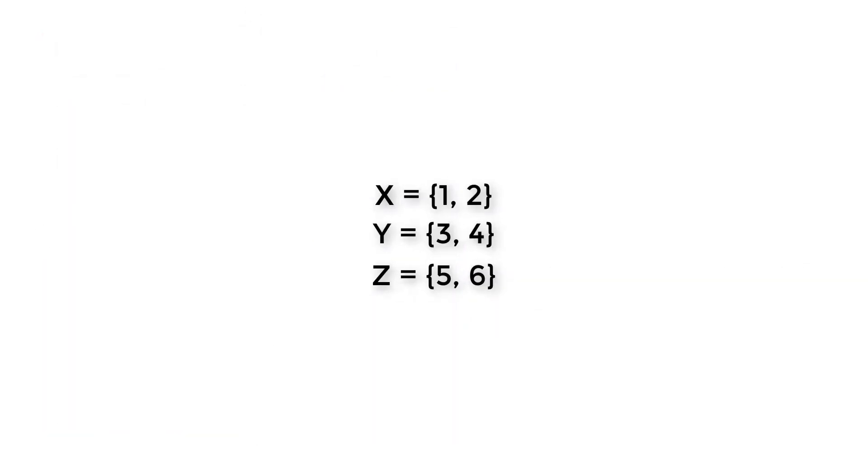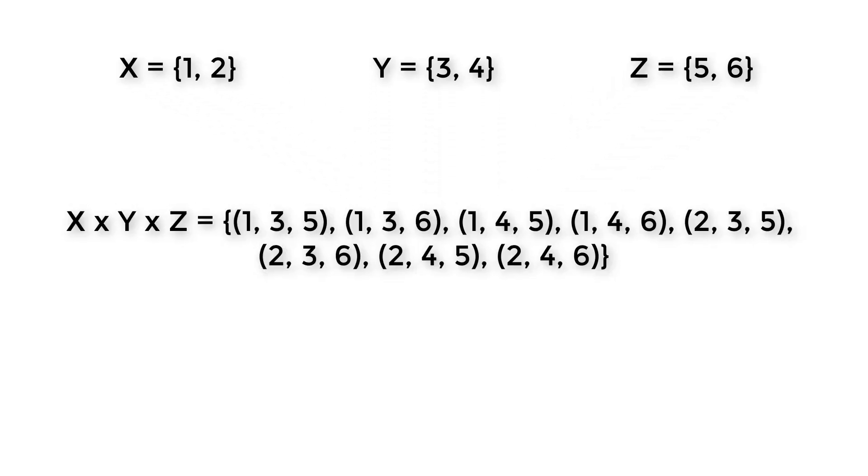Suppose we have three sets X, Y and Z, then the Cartesian product of X x Y x Z is a set of (1,3,5), (1,3,6), (1,4,5), (1,4,6), (2,3,5), (2,3,6), (2,4,5), and (2,4,6).